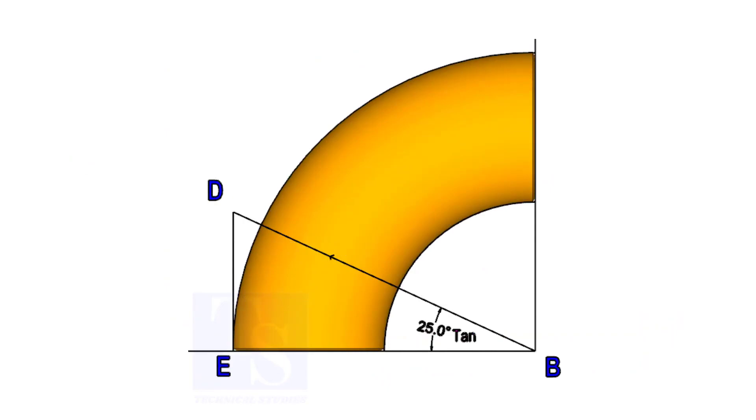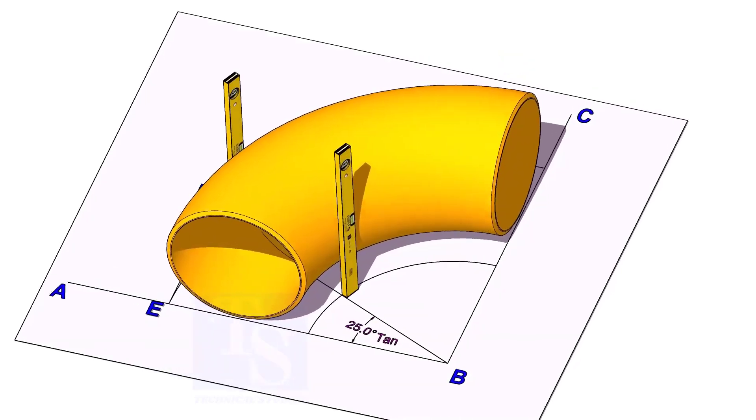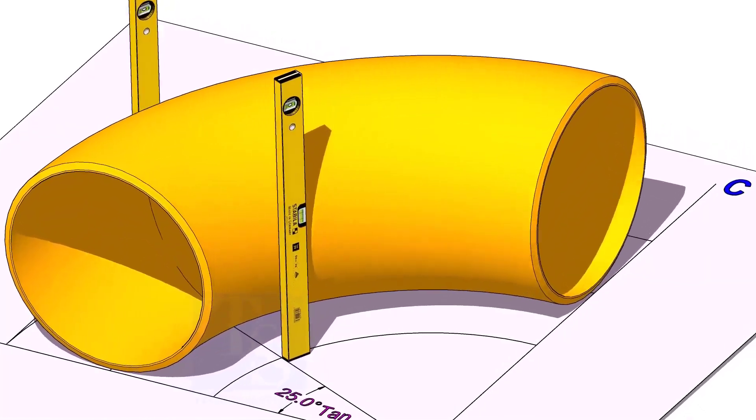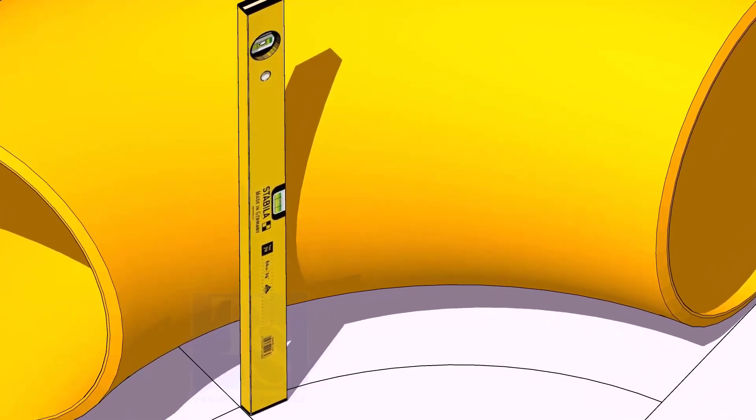Now, put the elbow exactly on the layout as shown. Hold two large level bottles at the edge of the elbow on both sides vertically and strike a mark where the level bottle edge touches the elbow.